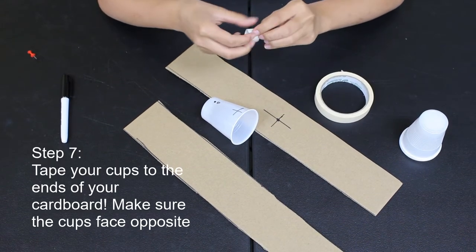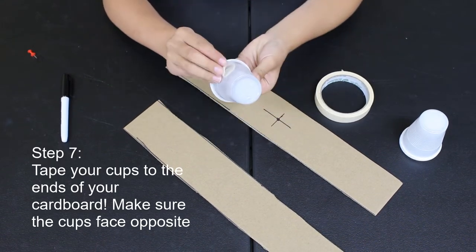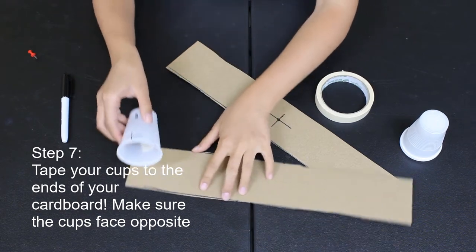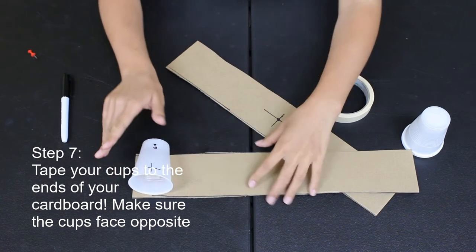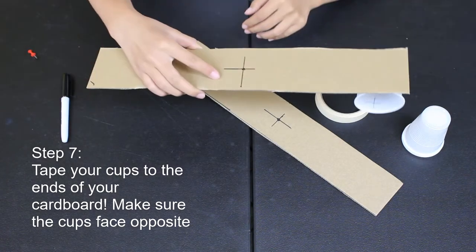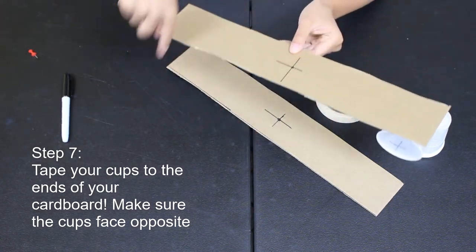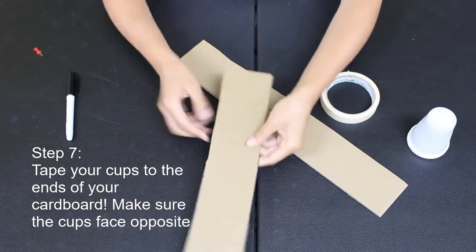Tape your cups to the end of your cardboard. Tape one cup in whichever direction, but make sure the next cup faces the opposite direction. That way they'll be going in the same direction when the cardboard spins.